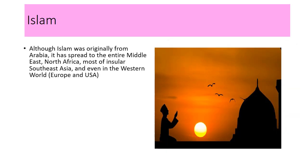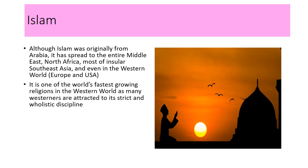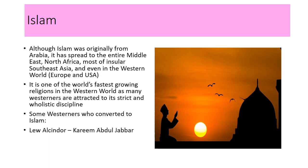Now let's talk about Islam. Although Islam was originally from the Arabian Peninsula, it has spread to the entire Middle East, North Africa, and most of insular Southeast Asia, and even in the Western world, in Europe and in the United States. It is one of the world's fastest-growing religions in the Western world, as many Westerners are attracted to its strict and holistic discipline. Some Westerners who converted to Islam were Lew Alcindor, now popularly known as Kareem Abdul-Jabbar, and Cassius Clay, who changed his name to Muhammad Ali.